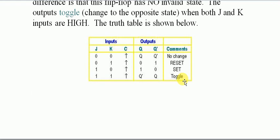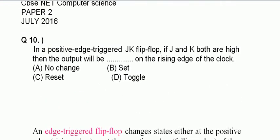Toggle means changes to the opposite state. Means if the current state is 0, then it will change to 1, and if the current state is 1, it will change to 0. So the answer is D, Toggle.